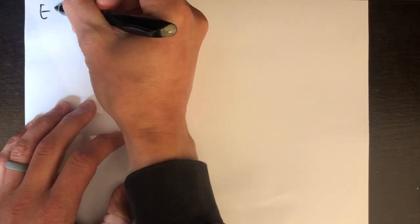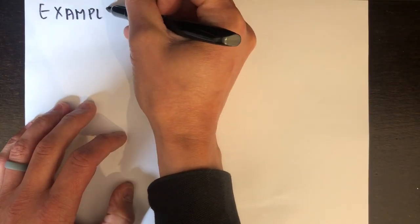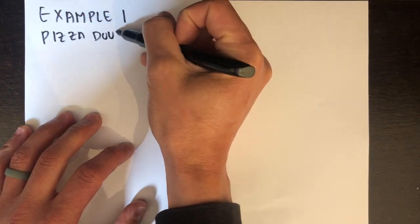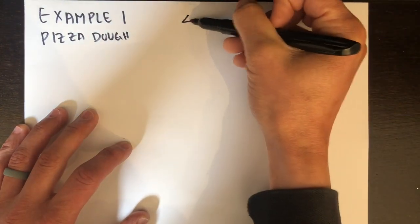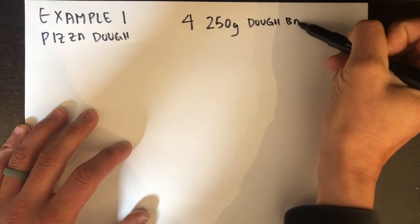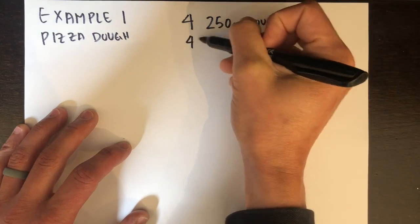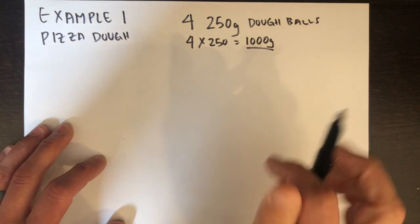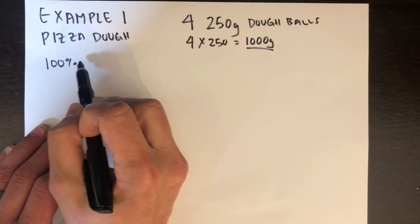So first example I'm going to be doing is with pizza dough. Typically with pizza dough, you might have a certain number of pizzas that you want to make at a certain weight. I'm going to be using the example of four 250 gram dough balls. I'm just going to start by taking four times 250, which gives me a thousand grams. I'm going to start there and write down a quick pizza dough recipe.